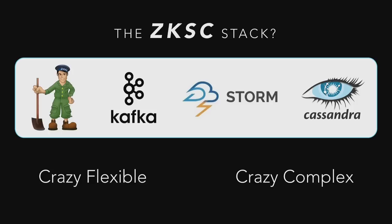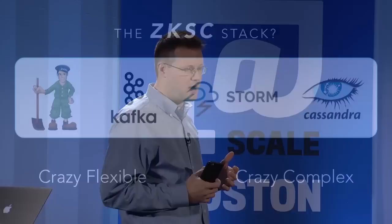Zookeeper does distributed coordination. Kafka is a distributed fancy-pants message queue system — it's very cool software. Storm is a stream processing system that lets you move processing to the data or move data to the processing in interesting ways. And Cassandra is a state management system, a data store. These things are really flexible — you can build a lot of different things and swap out one component for another.